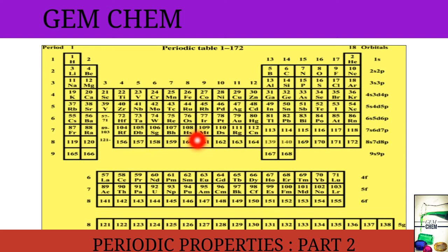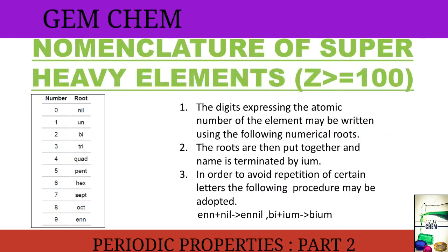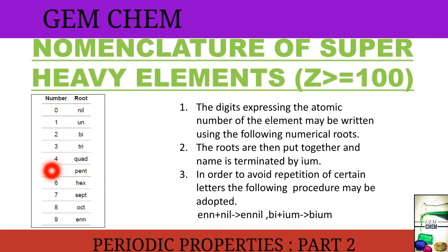Now we will know how they are named. Though they have names after scientists, we need to know how to name them in a systematic manner. The rules for writing the names: the digits expressing the atomic number are written using the following numerical roots — for 0: nil, for 1: un, for 2: bi, for 3: tri, for 4: quad, for 5: pent, for 6: hex, for 7: sept, for 8: oct, for 9: en.